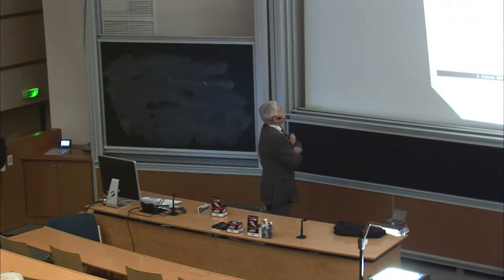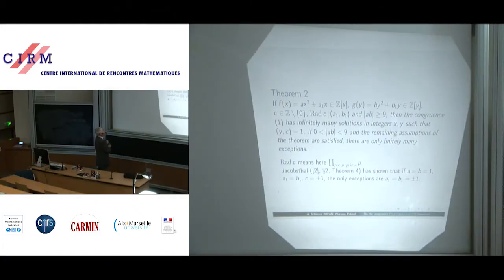Congruence 1 has infinitely many solutions in integers XY such that Y is relatively prime to C. If 0 is less in absolute value than AB and this is less in absolute value than 9, and the remaining assumptions of the theorem are satisfied, there are only finitely many exceptions.